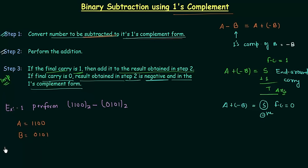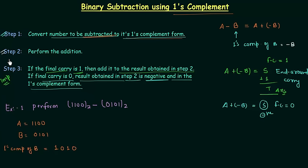So we will find out the one's complement of b. One's complement of b is simply 1010 — we complement each and every bit. And we have to add 1100 and 1010 in step number two, because 1010 is nothing but minus of b.